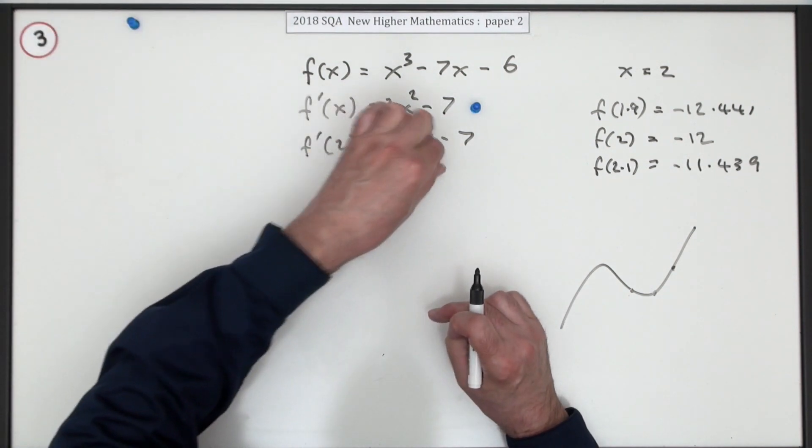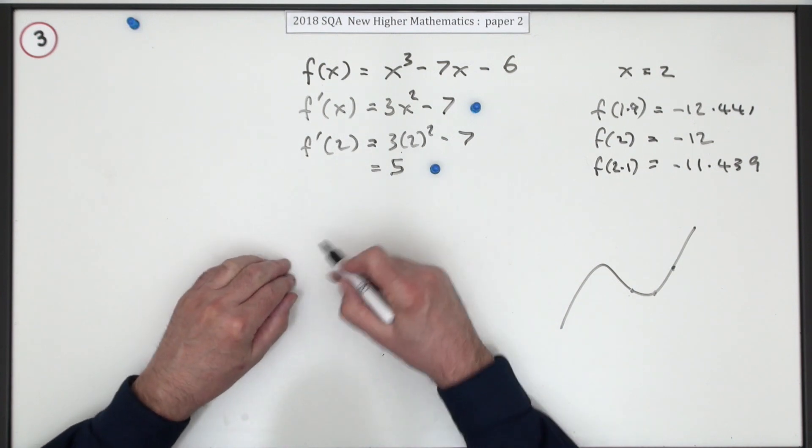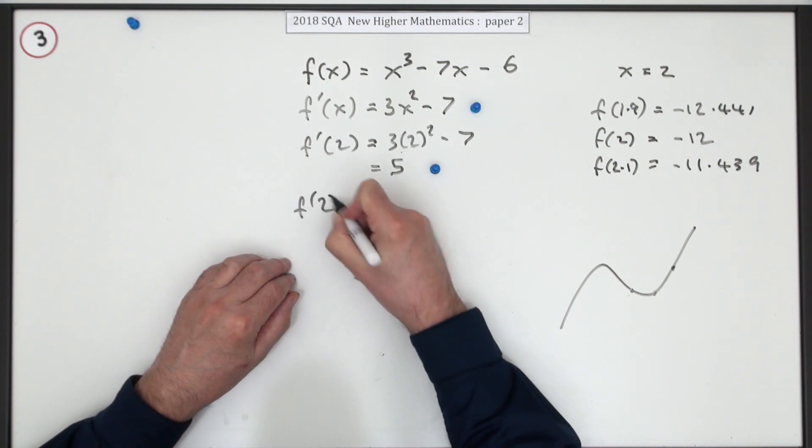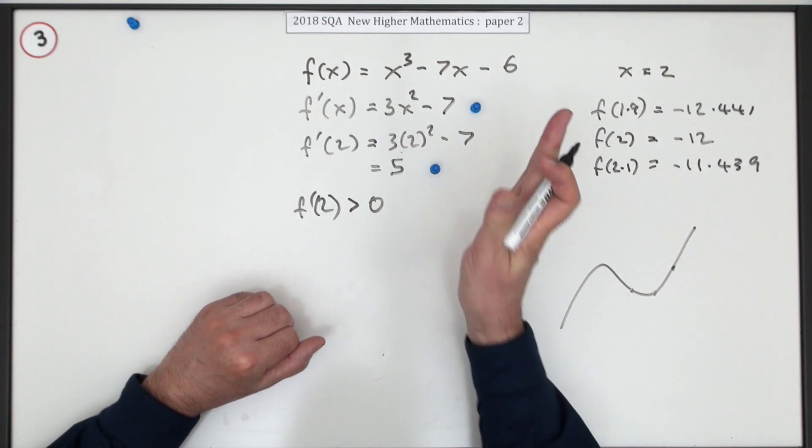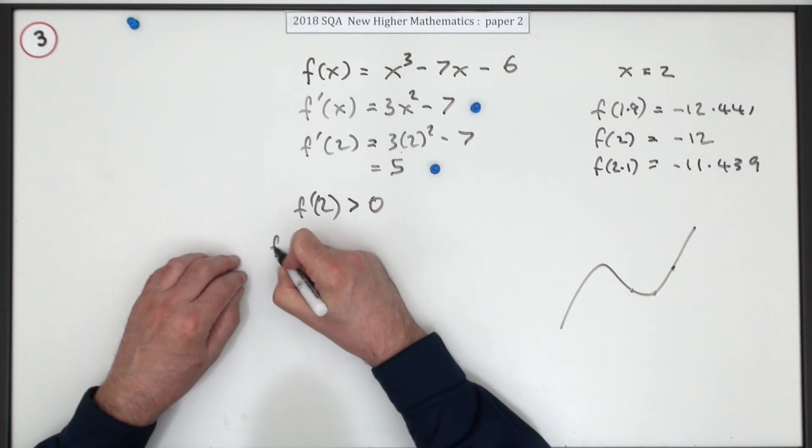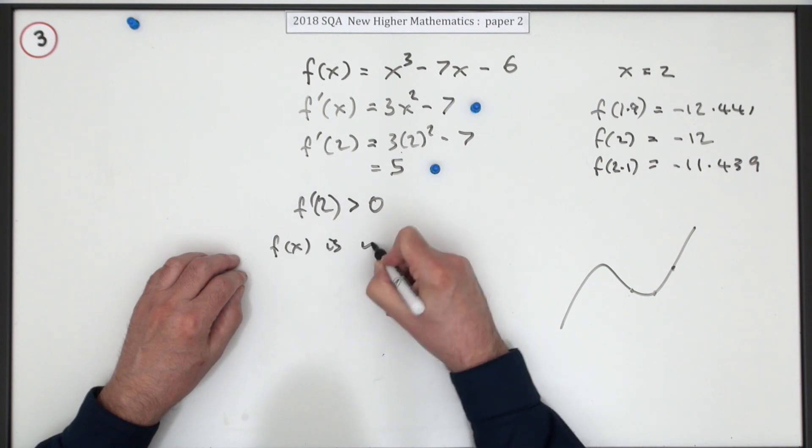Last part: interpret the result. Well, f'(2) is greater than zero, so that we're on the way up, so that means the function is increasing at x equals two.